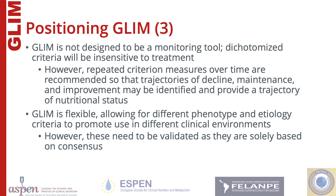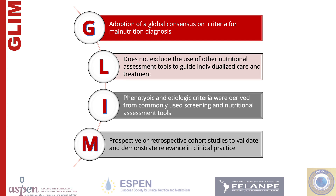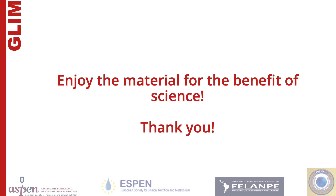GLIM is a flexible approach for use in diverse hospital settings where resources may vary. However, the framework continues to undergo validation and there may be adjustments with developing knowledge. In sum, GLIM is a consensus-based framework for categorizing a patient as malnourished. GLIM is to be used alongside current valid screening and assessment tools and methods that guide treatment decisions. GLIM is based on the leading screening and assessment tools currently used. Three phenotypic and two etiologic criteria are used to determine if a patient should be categorized as malnourished. Research based on retrospective and prospective data is needed to validate GLIM. Thank you for your interest in GLIM.